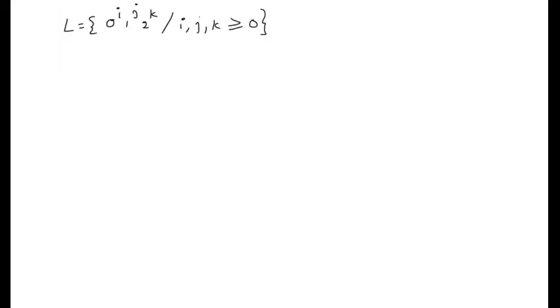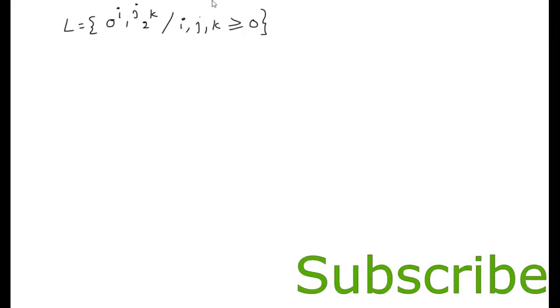We will now see an example of how to draw an NFA with Epsilon transitions. Looking at this language, we can say that the strings are of the format: any number of zeros, followed by any number of ones, followed by any number of 2s — that is, the language 0* 1* 2*.